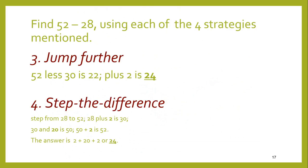Step the difference: 28 and another 2 makes 30, another 20 makes 50, and another 2 makes 52. The difference was 2 and 20 are 22, and another 2 makes 24. The answer is the same — there are just a number of different strategies for working this out mentally.